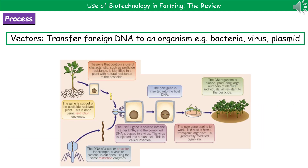The last thing we're going to look at is the process by which we produce a genetically modified organism. The first thing we need to know is what a vector is. We use vectors to transfer foreign DNA to an organism, and the vector could be a bacteria, a virus, or a plasmid.